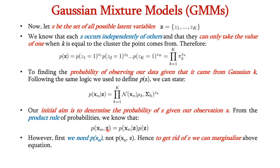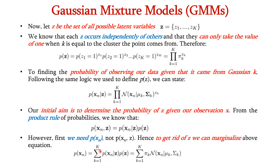To get rid of z, we marginalize the equation. Since z is a discrete value, we apply summation: P(xn) = summation from k=1 to K of P(xn | z) times P(z). Substituting, P(z) becomes pi_k and P(xn | z) becomes the normal distribution of xn given mu_k, sigma_k.